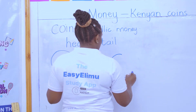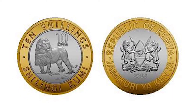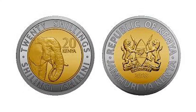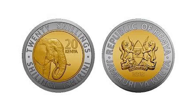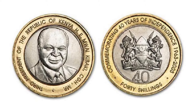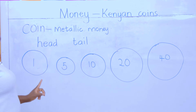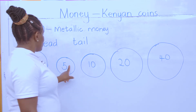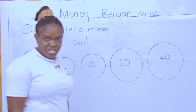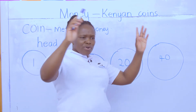Then we come to the 10 shillings coin. After 10, we have the 20 shillings coin. And nowadays we even have another one — 40 shillings. So how many coins do we have in Kenya? We have 5 coins in Kenya, and each coin has its own features.